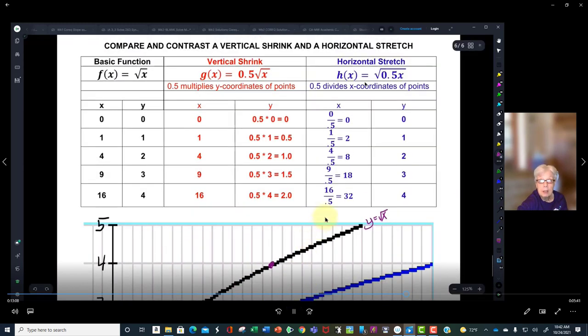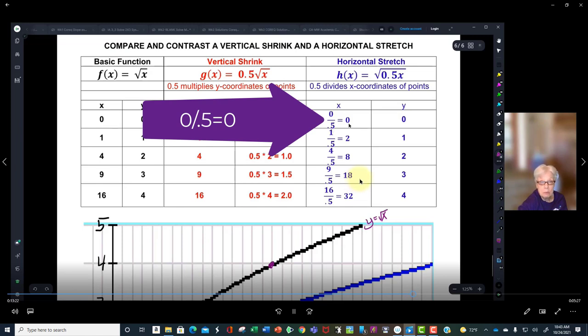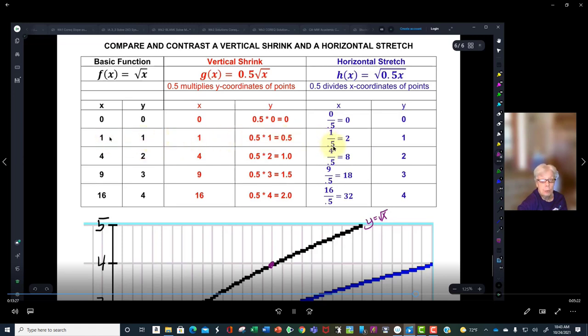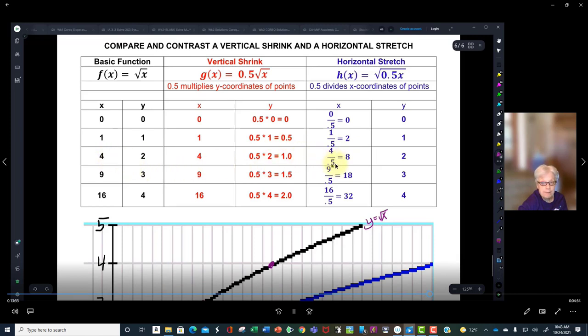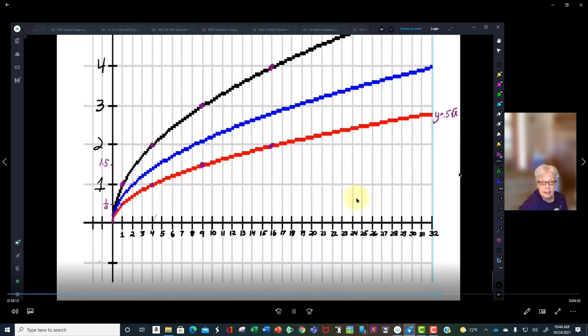Okay, now we're going to stretch out all of the x-coordinates. Here's 0 when it's multiplied by 1 half, 0.5, is still 0. But 1, look what happens. When it's divided by 0.5 becomes 2. Whenever you divide a number by a fraction, a proper fraction, it's made bigger, it's magnified. Here 4, when it's divided by 1 half, becomes 8, twice as large. 9 becomes 18, 16 becomes 32. So, let's take a look at this.